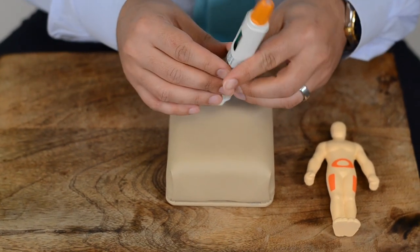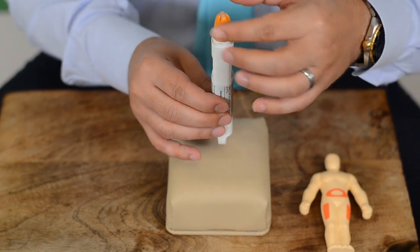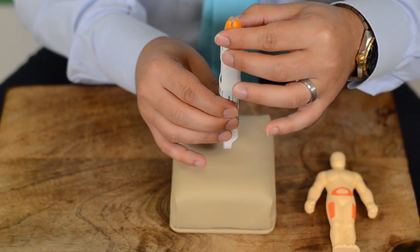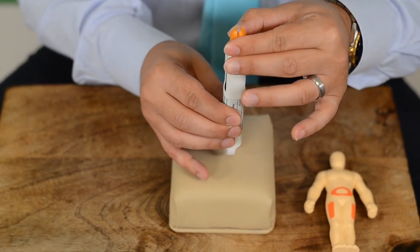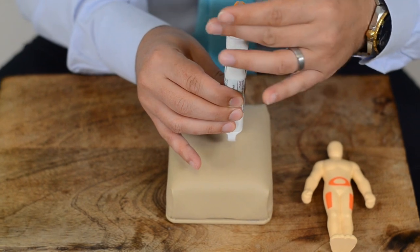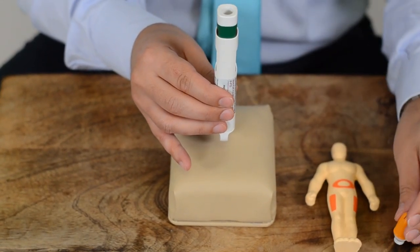Now, the next step is important. You have to keep this upright, and you have to turn the cap in a counterclockwise direction. Do not pull, because it can actually start injecting. So you take that cap off by turning it, and now as you can see, the pen is ready to inject.